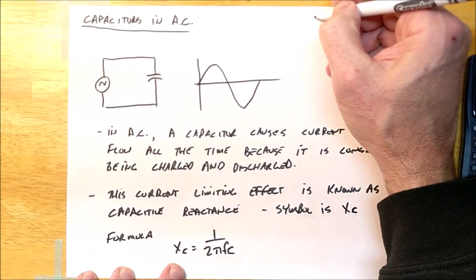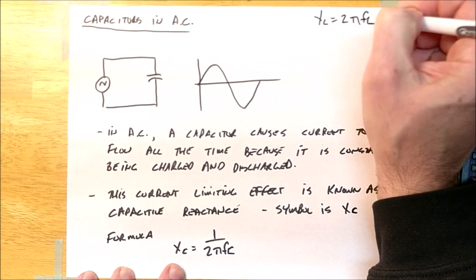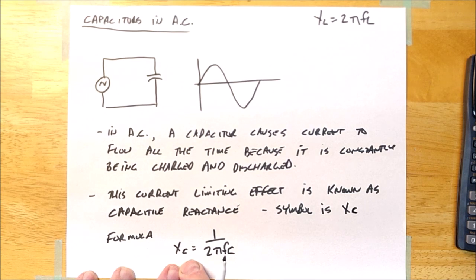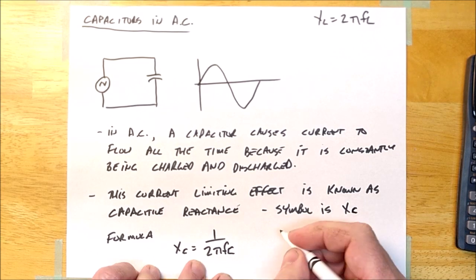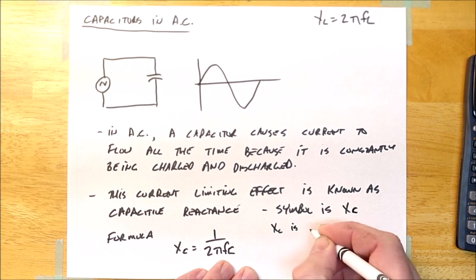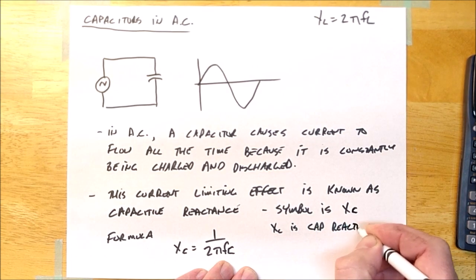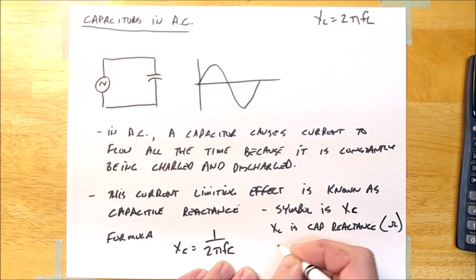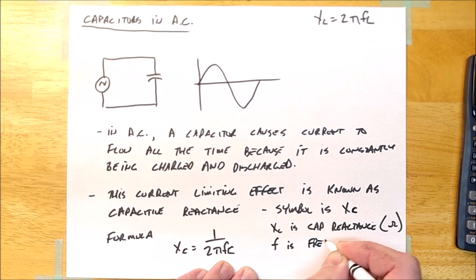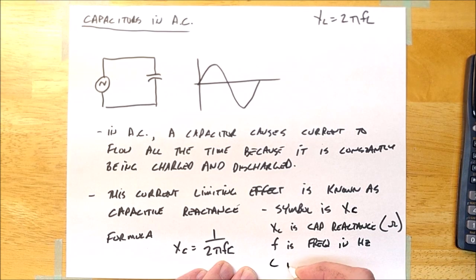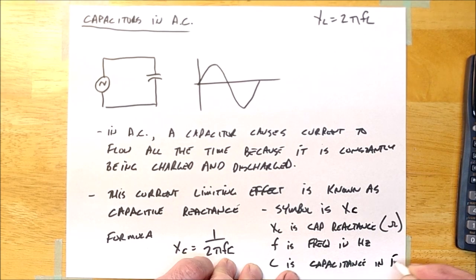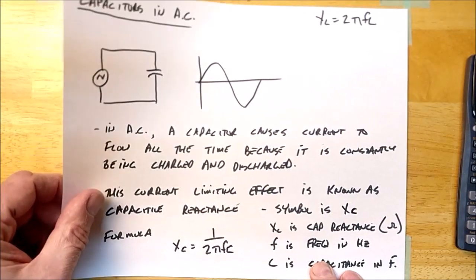Now, the other formula that we used about inductors, just as a reminder, was XL is equal to 2 pi FL. That was for inductors. Now we have a capacitor formula. It's XC is equal to 1 over 2 pi FC, where XC is the capacitive reactance in ohms. F is the frequency in hertz. And C is the capacitance in farads.